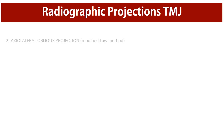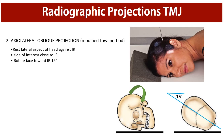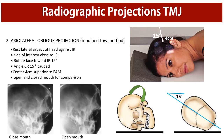The second projection is the axiolateral oblique projection. Ask the patient to rest the lateral aspect of the head against the image receptor. Usually both left and right sides should be taken for comparison, but the side of interest should be close to the image receptor. Rotate the face 15 degrees toward the IR to avoid superimposition of both TMJ joints. Then adjust the central ray just 4 centimeters superior to the external auditory meatus with a 15-degree angle towards the foot. This projection should also be made in both open and closed mouth conditions for comparison, and these projections are useful for fractures, abnormal relationships, or to evaluate the range of motion between condyles and the TMJ fossa.